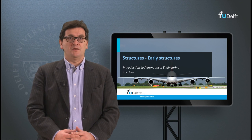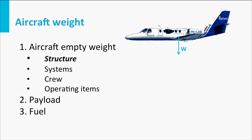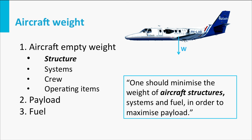Let's start with looking back at the aircraft weight. Last time we saw that the aircraft weight consists of three main components: the aircraft empty weight, the payload, and the fuel. The weight of the structure is one of the main contributors to the aircraft empty weight, and there is always a drive to reduce the weight of the structure.